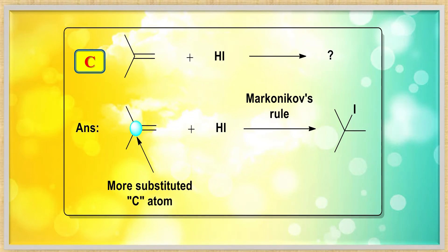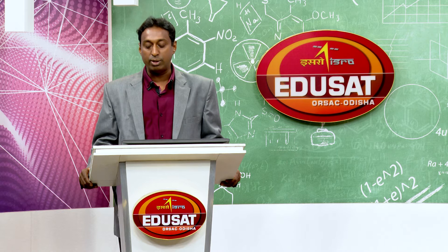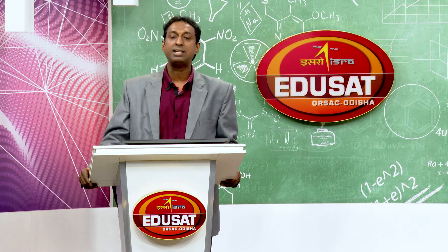Key distinction: Br2 in CCl4 is an addition reaction — remove the double bond and add one Br to each carbon. But if sunlight or heat is present, it is allylic bromination. Next question: isobutylene + HI → tertiary butyl iodide by Markovnikov addition, since I⁻ attaches to the more substituted (least H) carbon.